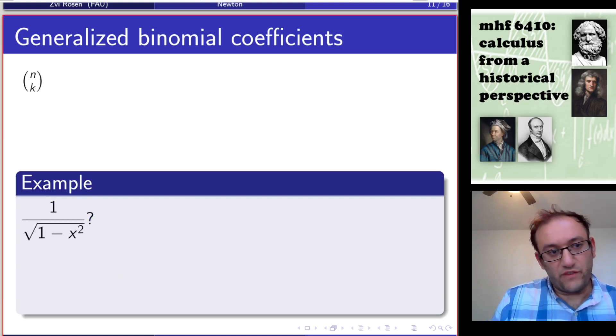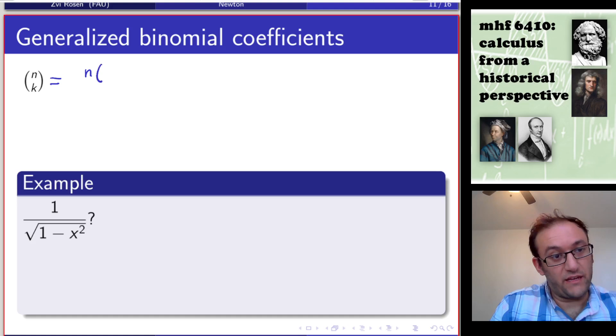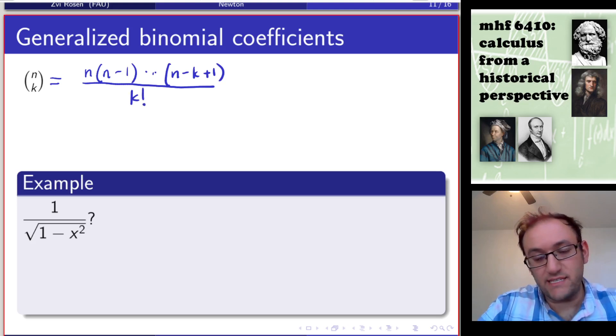So Newton's innovation was to come up with a generalized formula. Newton introduced the generalized definition as follows: n choose k is going to be given by n times n minus 1 through n minus k plus 1 divided by k factorial. It should be pretty clear that when n is an integer, this simplifies to n factorial over k factorial n minus k factorial. But when n is not an integer, this is also well defined.